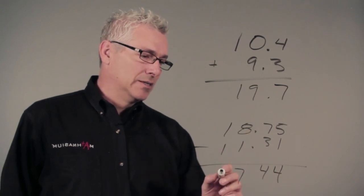5 minus 1 is 4. 7 minus 3 is 4. 8 minus 1 is 7 and 1 minus 1 is 0. My decimal has to be placed exactly below the other decimals and my answer is going to be 7.44.